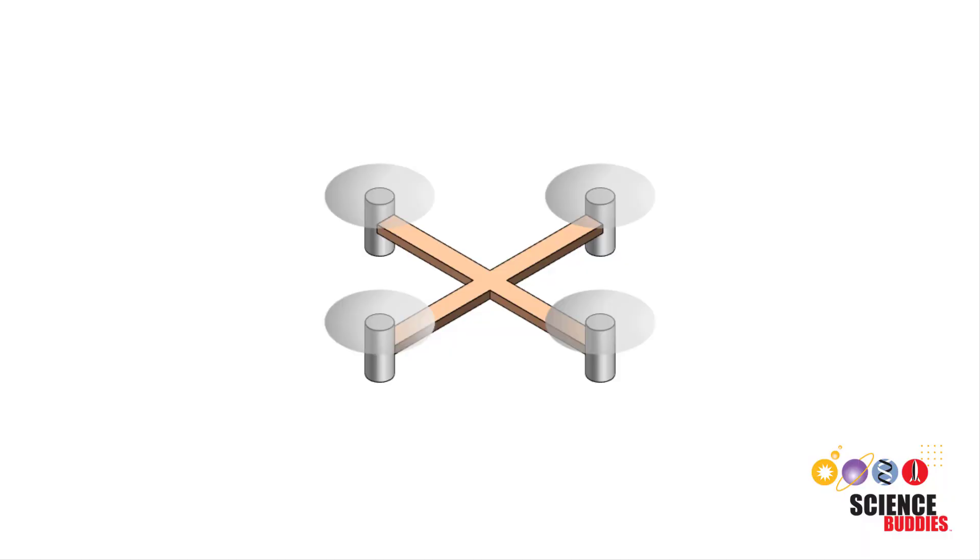Before we continue, let's do a conceptual overview of how drone steering works. A quadcopter, a popular type of drone, has four propellers, each driven by its own motor. When the four motors all spin at the same speed, each propeller generates the same amount of lift and there is no net torque about the drone's center of mass.